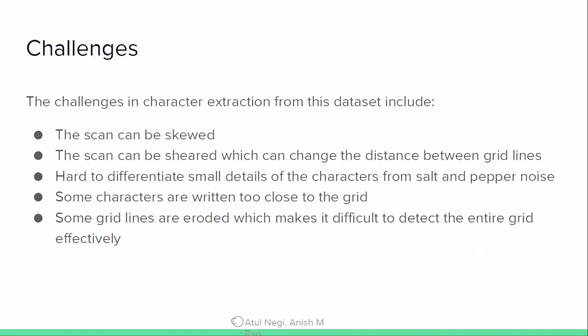The scan could be skewed, which is going to change the distance between the grid lines. During scanning there is also some noise, and as mentioned, characters are sometimes written very close to the grid, so there may be intersection between the grid line and the writing. We have to separate out the grid lining and the writing. Sometimes the grid lining is also eroded, making it difficult to detect exactly where the grid line is. First you detect the character and extract its region based on the position of the grid line.